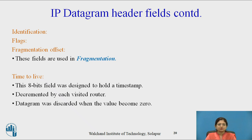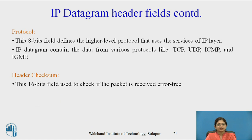Another field is time to live (TTL). This 8-bit field was designed to hold a timestamp — it is decremented by each visited router, and the datagram is discarded when the value reaches 0. The next field is the protocol field. This 8-bit field defines the higher level protocol that uses the services of the IP layer. The IP datagram can contain data from various protocols like TCP, UDP, ICMP, and IGMP.